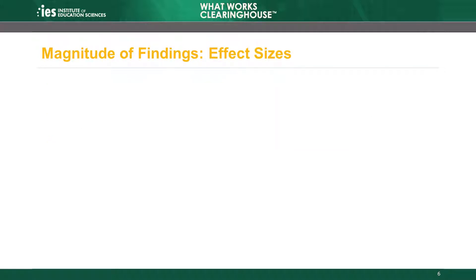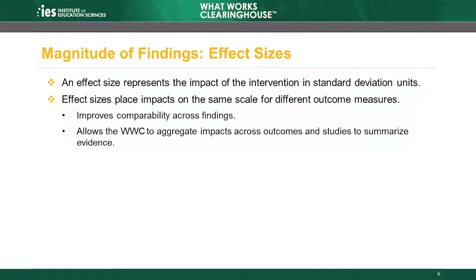Mean differences can be translated into the second measure of magnitude of findings: effect sizes. The effect size represents the impact of the intervention in standard deviation units. Because the effect size provides a common scale for measuring impacts, it can be used to compare findings across different outcome measures and allows the WWC to aggregate impacts across outcomes and studies to summarize evidence.